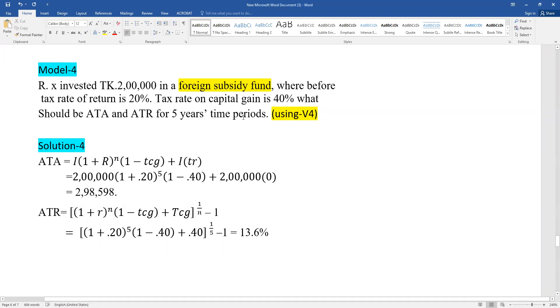For this problem, we need to find both ATA and ATR for a five year time period. The formula will change - when the model changes, the formula changes.